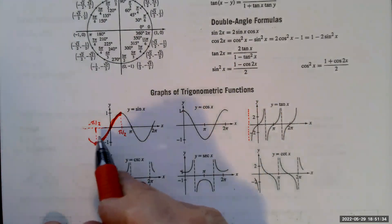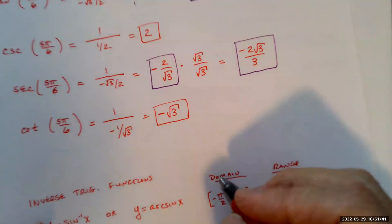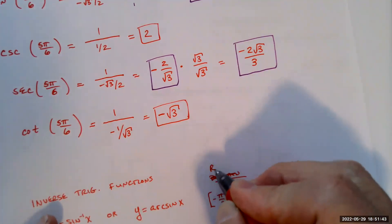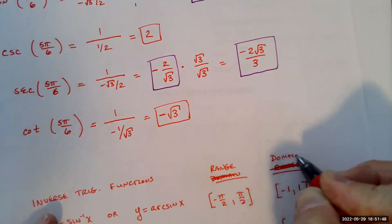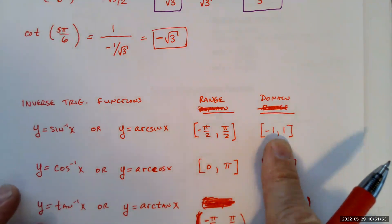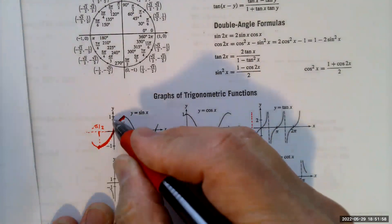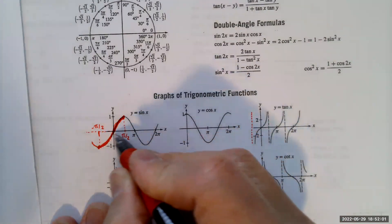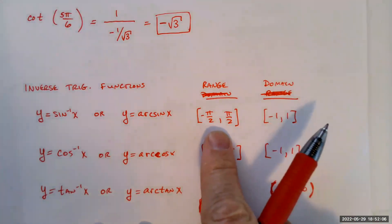The domain of the inverse sine function is negative 1 to 1, since that's the range of the sine function. We restricted the sine function's domain to between negative π/2 and π/2, so that interval is now the range of the inverse sine function.